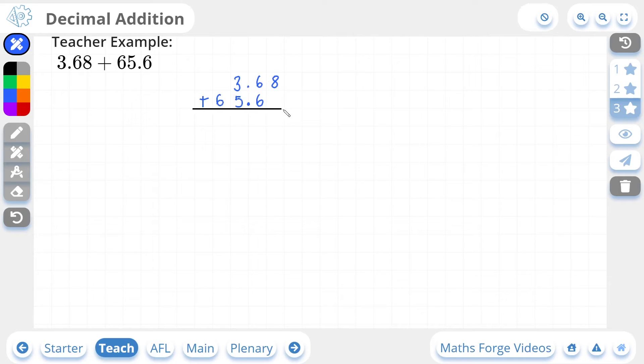Let's rule off. So we have 8 plus nothing, which is 8. 6 plus 6, which is 12. So the 2 goes here from the 12. And the 1 in the 12 gets carried over here.